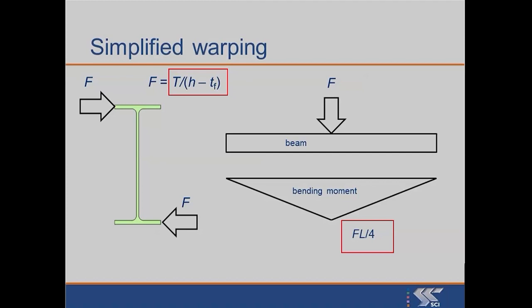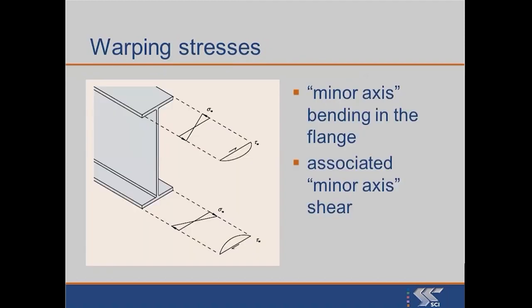Let's imagine we've got this torsion applied at mid-span. We can calculate the force F applied to one particular flange, and then we can work out the bending moment in that flange, dead straightforward, just FL over 4. That's going to give us a bending moment in the flange.